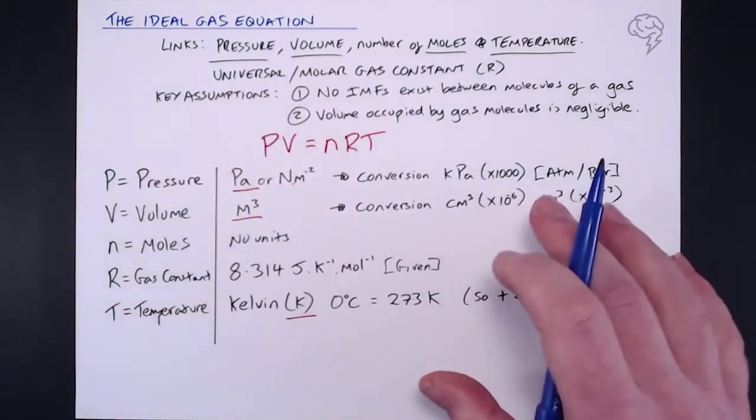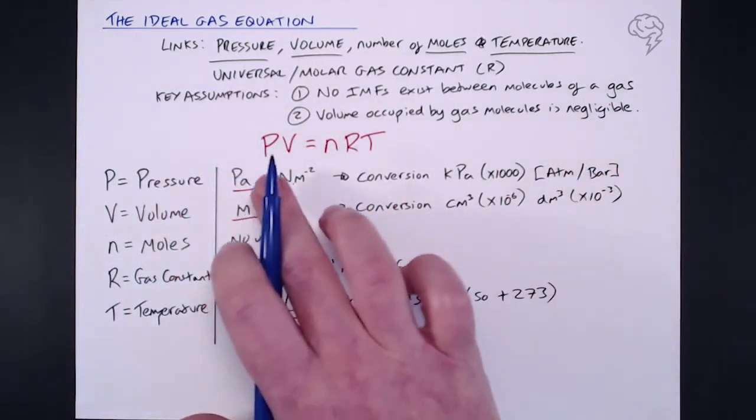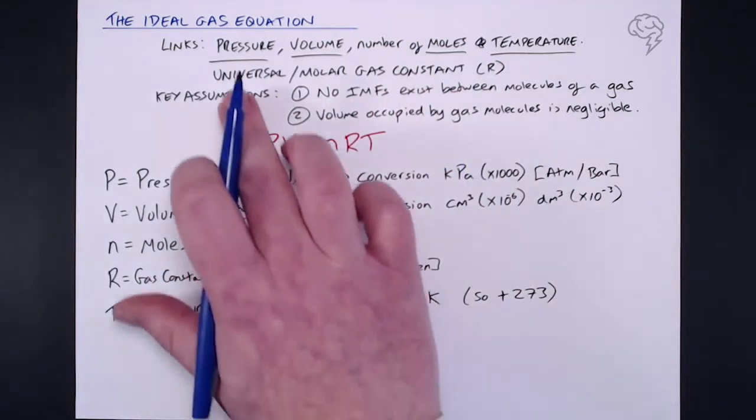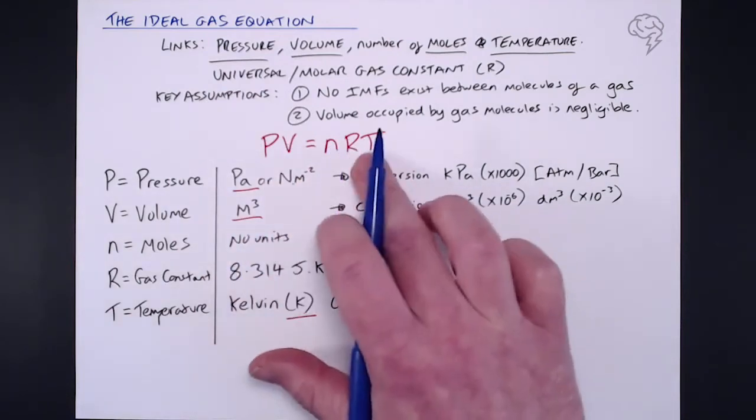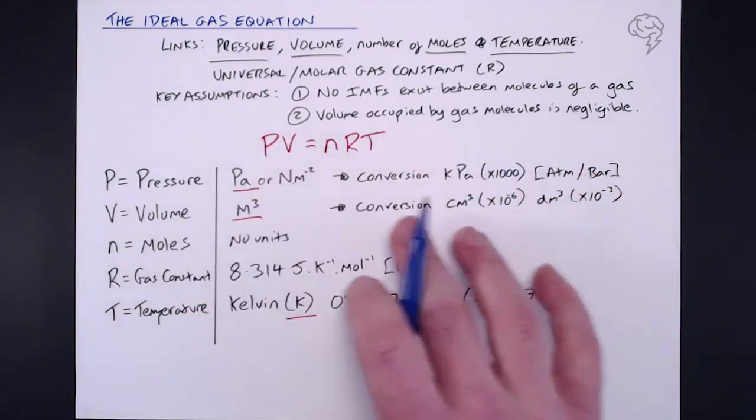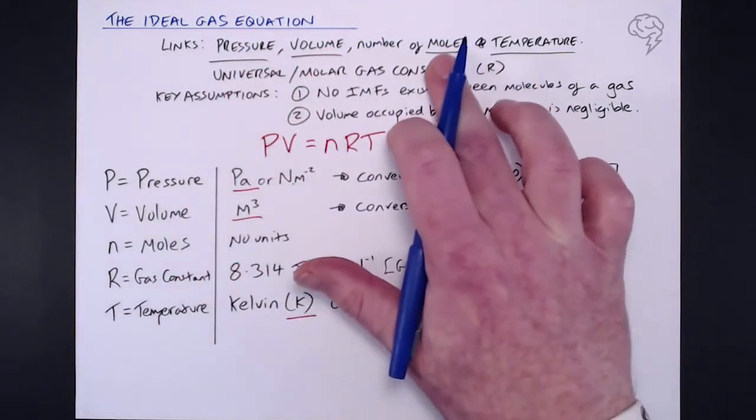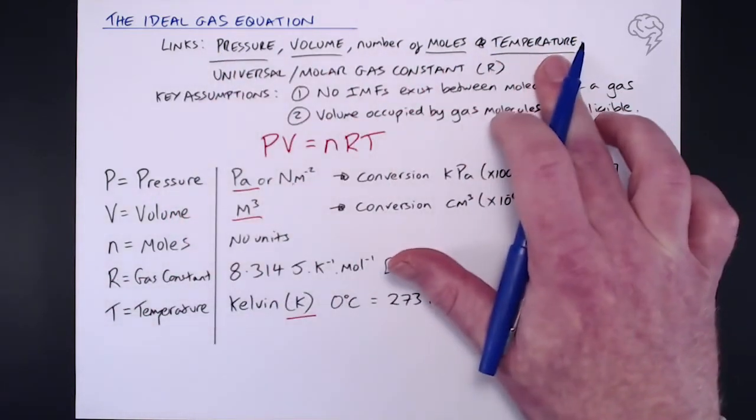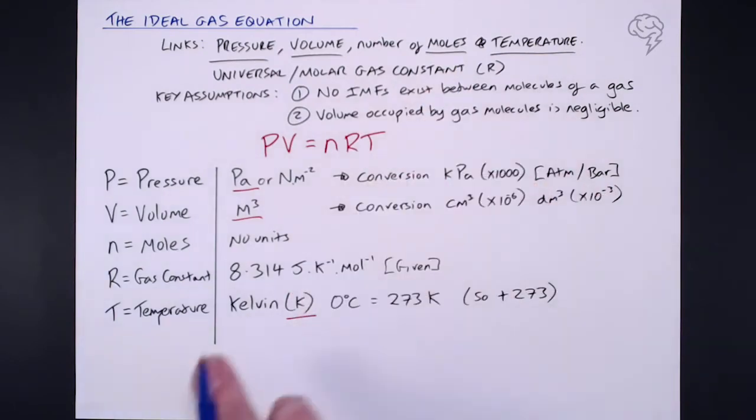So how do we go about using this? Well, in any exam question, we're going to be given a number of these things and asked to calculate the other. So if we're looking for pressure, guaranteed we'll be given the volume, number of moles, R we've always got, and temperature, and vice versa. So you could be asked to calculate pressure, volume, moles, or temperature. Of course, this is always given, so you wouldn't be asked to calculate the molar gas constant.